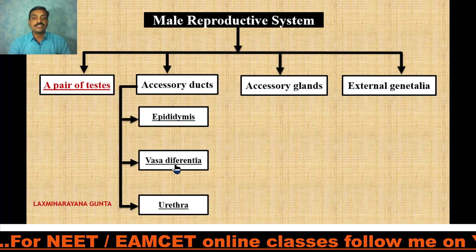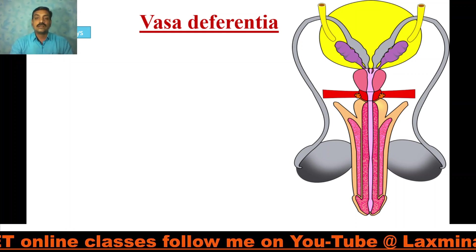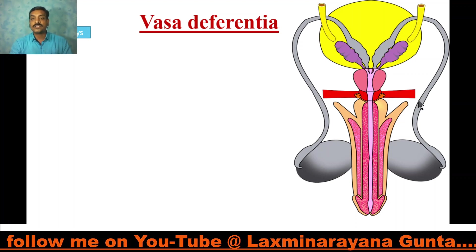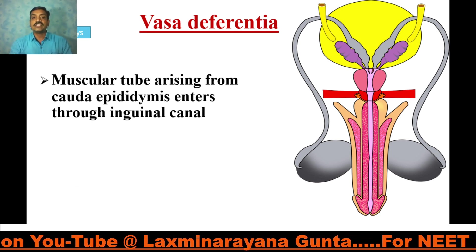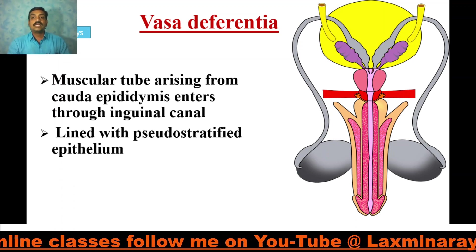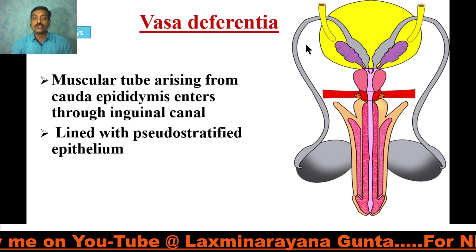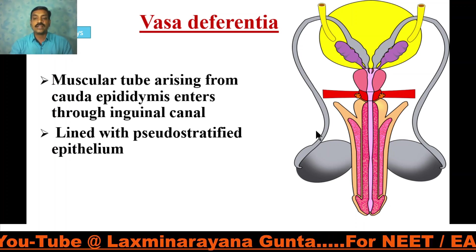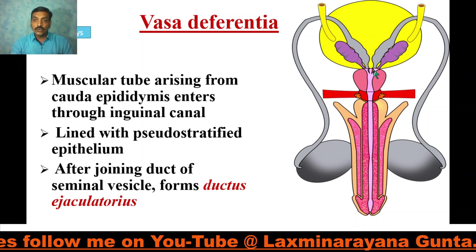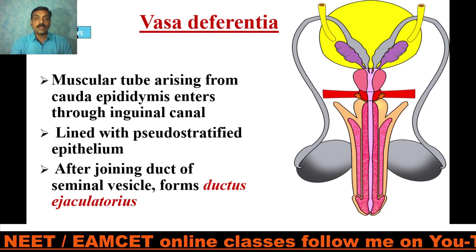The vasa efferentia, also called ductus deferens, are long muscular tubes arising from the cauda epididymis. They are lined with specialized tissue called pseudostratified epithelium. After joining the ductus of the seminal vesicle, these two ducts unite to form the ductus ejaculatorius, or ejaculatory duct.